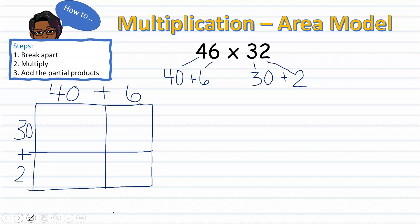Now I'm set to multiply. I will start by multiplying 30 times 40 and then 30 times 6. After multiplying 30 by 40 and 6, I'm ready to multiply 2 times 40 and 2 times 6. Now that I am done multiplying, we are ready for part 3, which is to add the partial products.